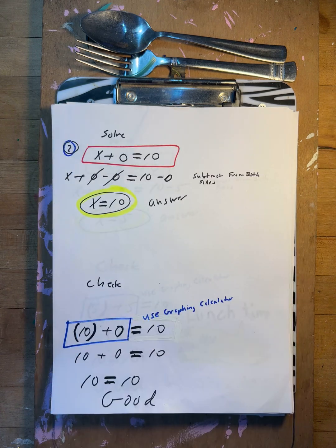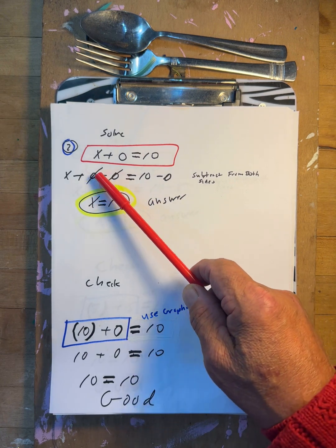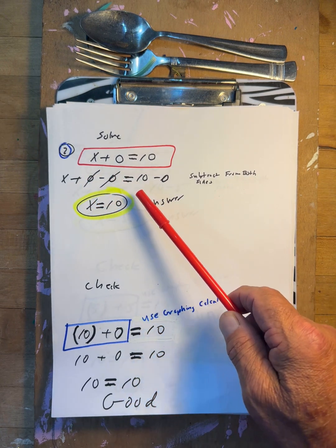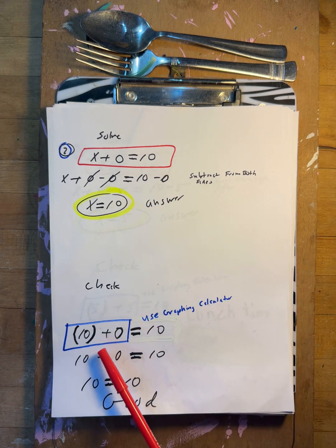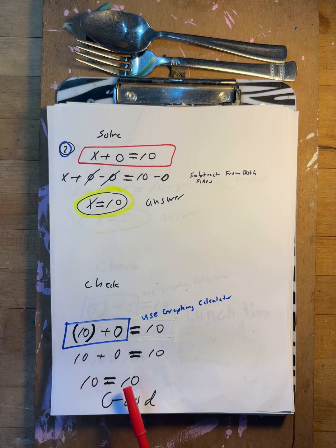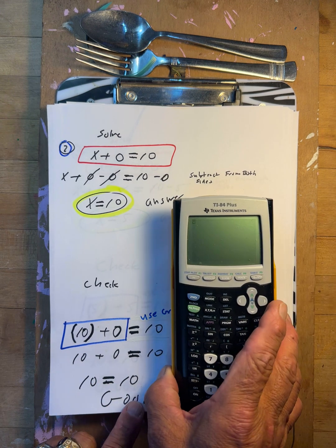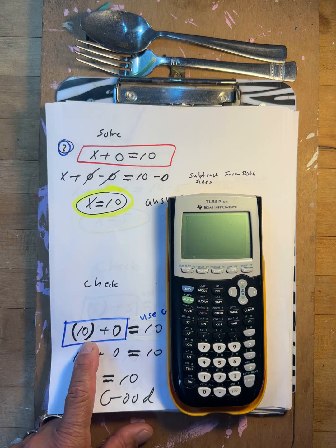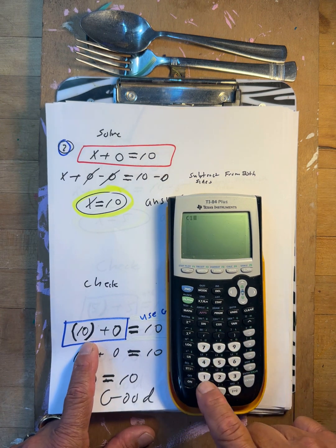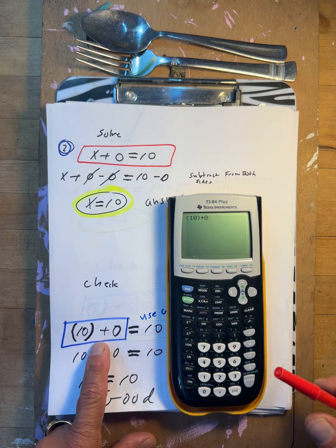Next one: x plus zero equals ten. Subtract minus zero from both sides — it's not going to change anything, so x equals ten. Does that work? Ten plus zero is ten. Yes. Use the graphing calculator: parentheses, ten plus zero — that's ten. It works.